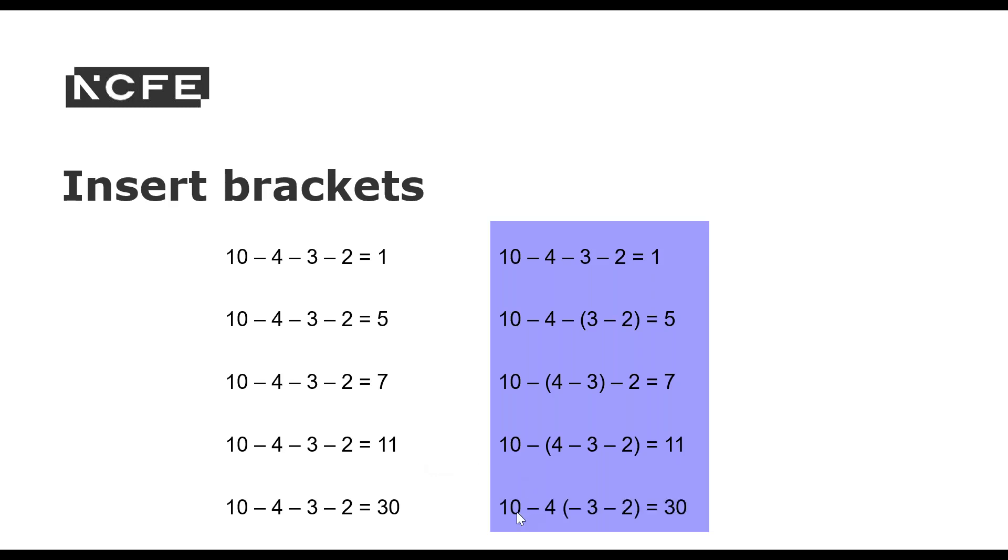And for this one, we do the brackets first. So minus 3 take away 2 is minus 5. Minus 5 times 4 is minus 20. We've got the minus and the minus which gives us a plus. So we've got 10 plus 20 equals 30.